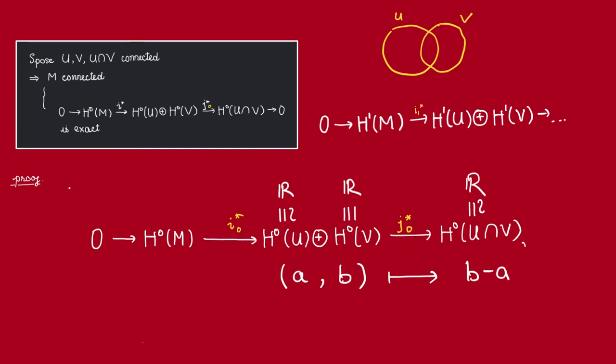Recall that by definition, this is the difference map. So if we identify these with R, then this map sends a pair (A, B) to the real number B minus A. Thus, clearly, this map is surjective. So we see that this sequence must be exact.